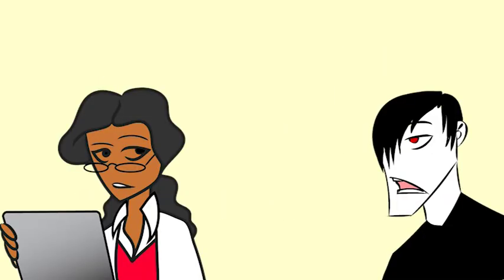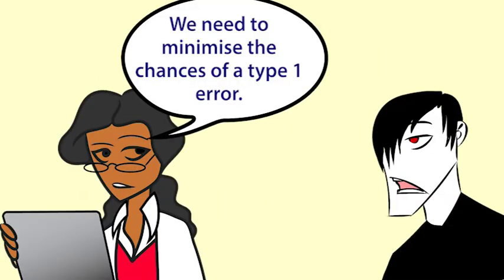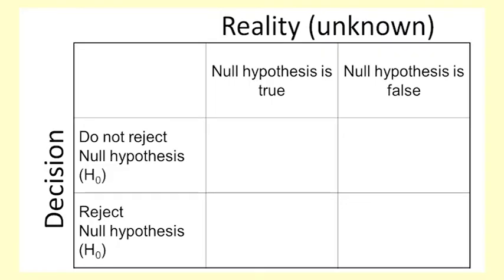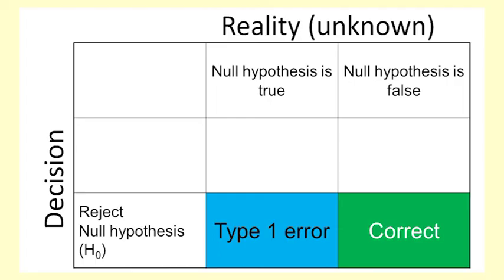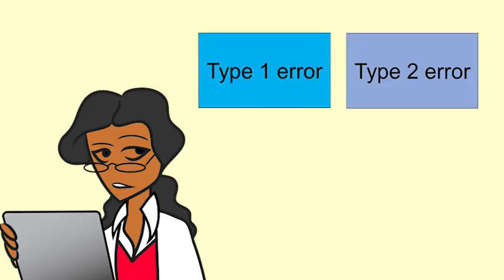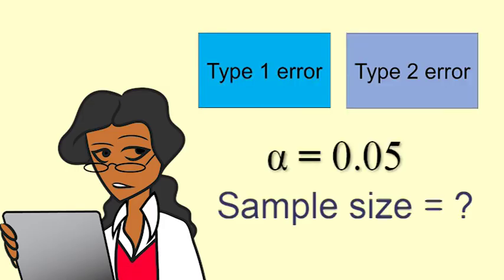It is important to know which kind of error is which, so that you can communicate with other people using the correct terminology. I find it easiest to think: did they reject the null hypothesis? If they did, then they will either be correct or make a Type 1 Error. If they did not reject the null hypothesis, then they will either be correct or make a Type 2 Error. It is also important to be aware of the two types of error so that you can make good decisions about your significance level and sample size.